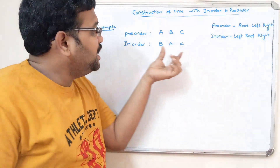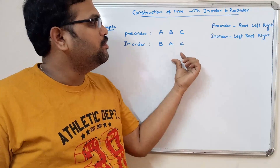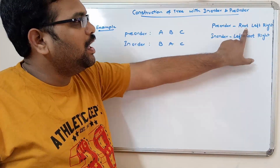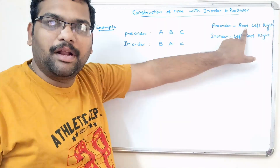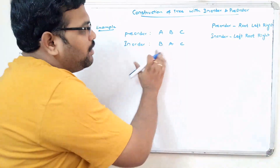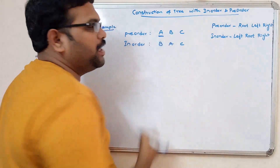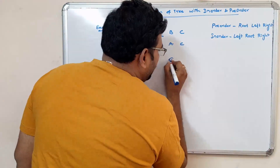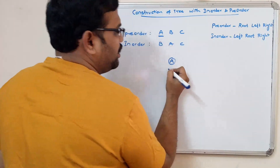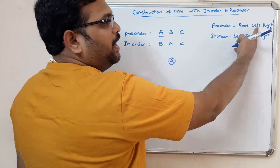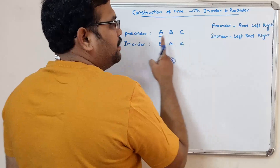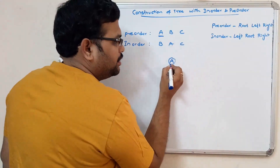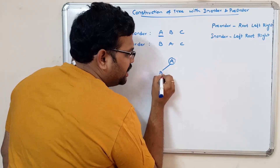From the pre-order traversal, the first element will be the root element. Here, A is the root node. So let us construct it — A will be the root node. Followed by left and right: B is the left child and C is the right child.